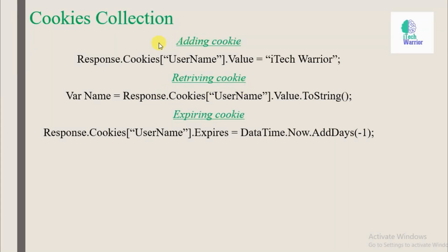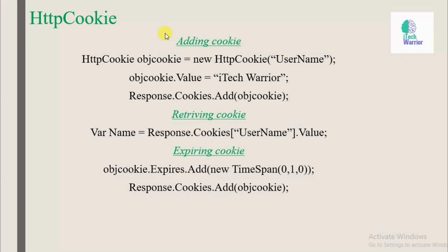Let's understand both methods with examples. For the cookies collection method, you can see adding the cookie, retrieving data from the cookie, and setting an expiry time to the cookie. For the HTTP cookie method, we create an object and store the value, retrieve the value from cookies, and set an expiry time. These are the two methods by which we can add a cookie, retrieve the value from a cookie, and set an expiry time.